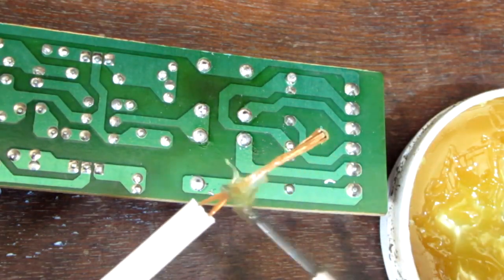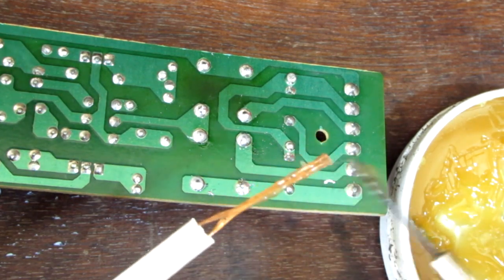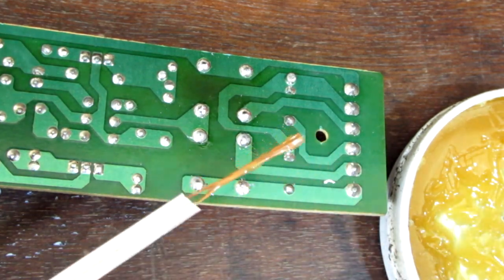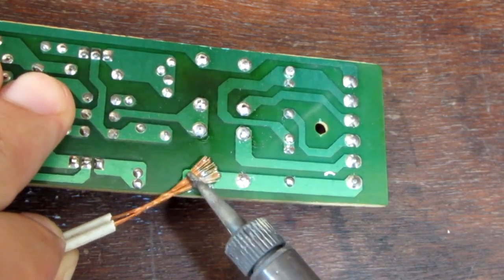And to make our homemade desoldering wick more efficient, I smeared it with some flux. Now which can be used as a normal desoldering wick.